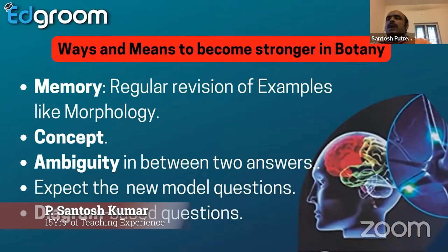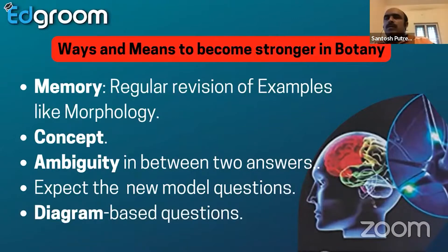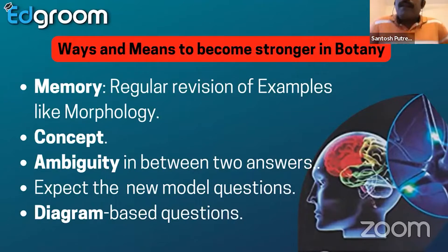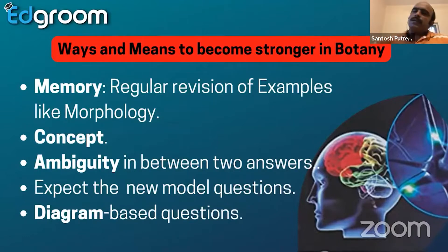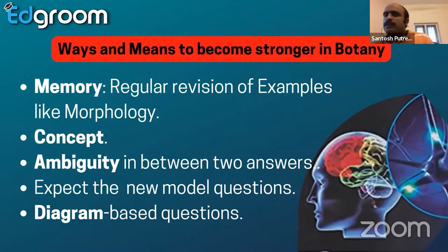So this is about how to present yourself in terms of becoming stronger — what are the different ways and things to become stronger? You divide the entire syllabus into different types of chapters: some are memory-based, some are conceptual, and some have both memory-based, conceptual, and application components. The first point is memory — regular revision of examples.